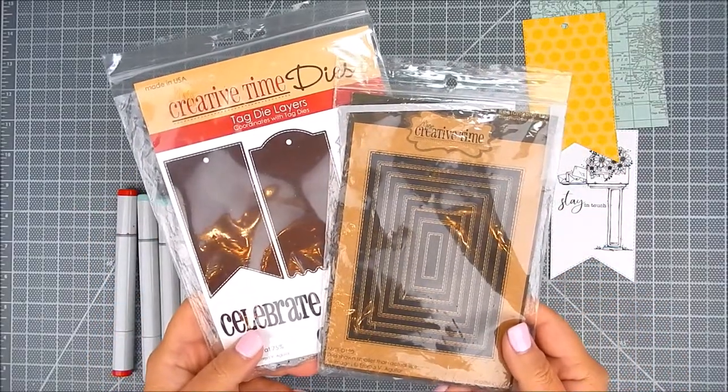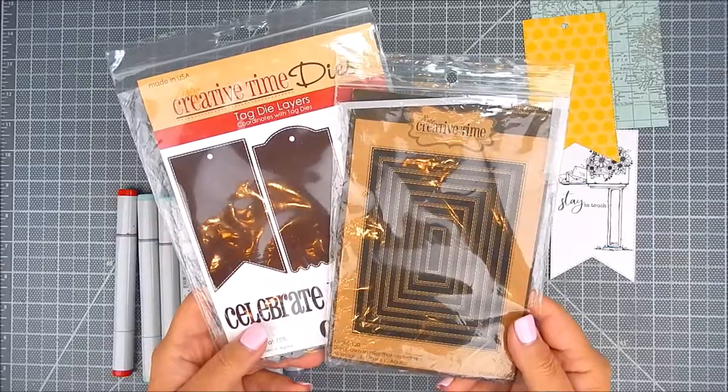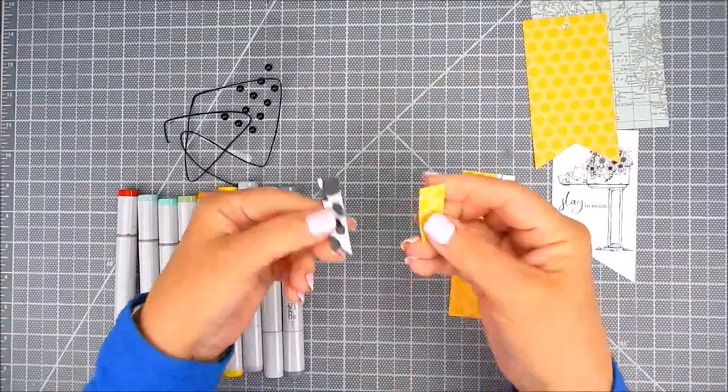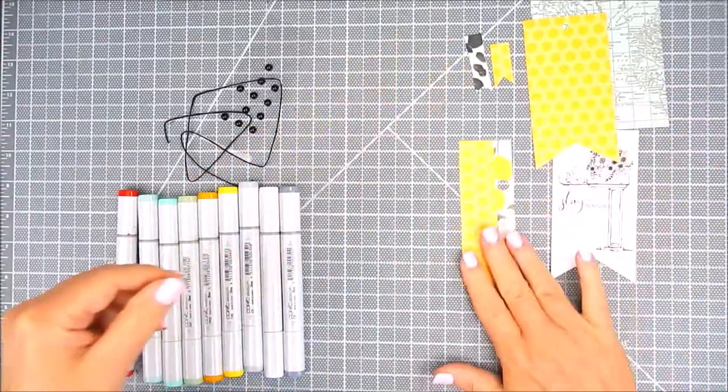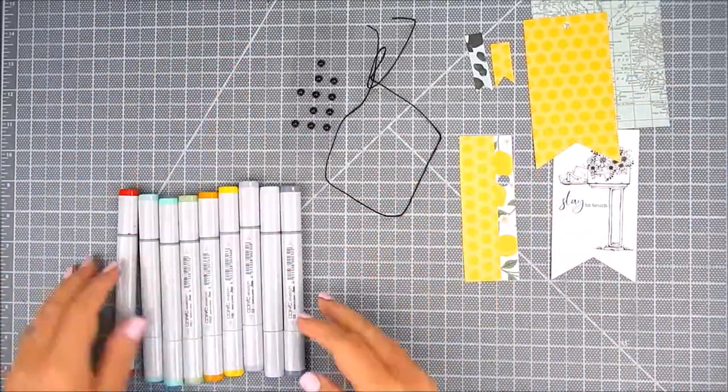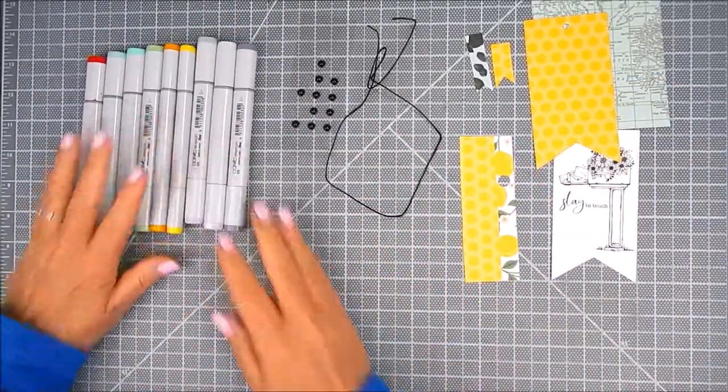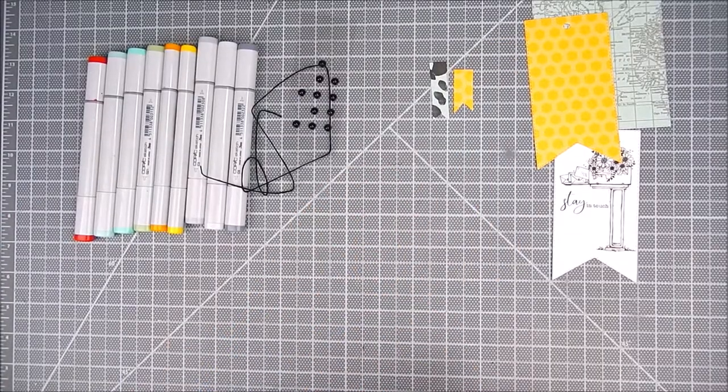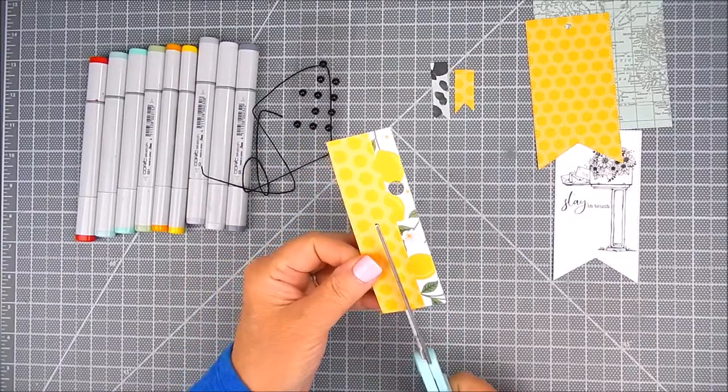I'm using dies by My Creative Time. Stitched rectangular dies and tag dies. I'm also going to hand cut a few accent flags. I'm using adhesive buttons and twine and Copic markers. The Copics will be listed on my blog.